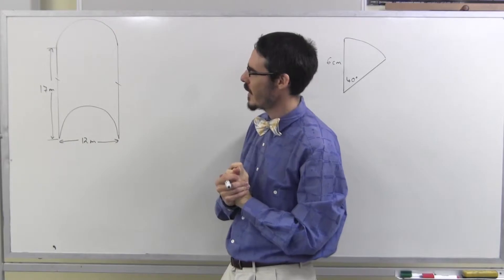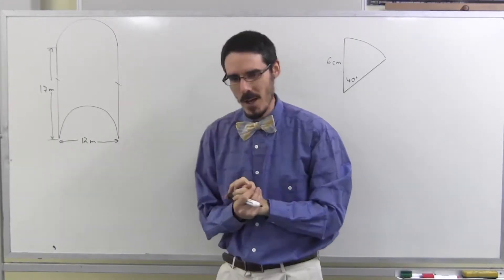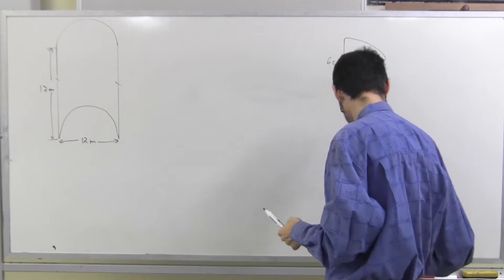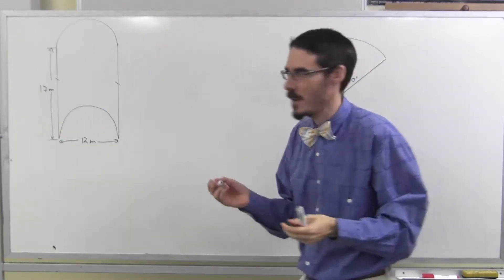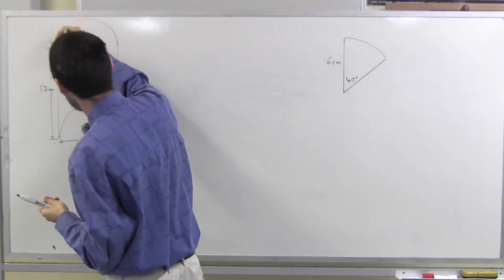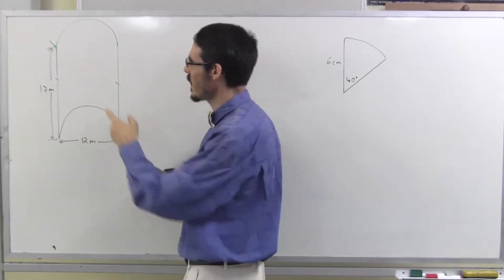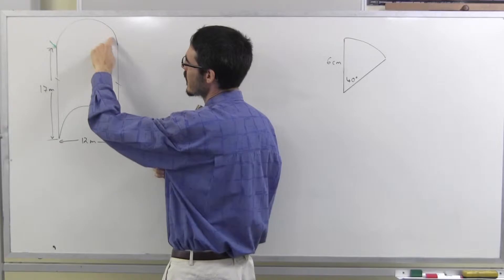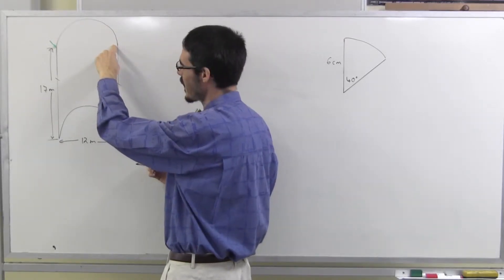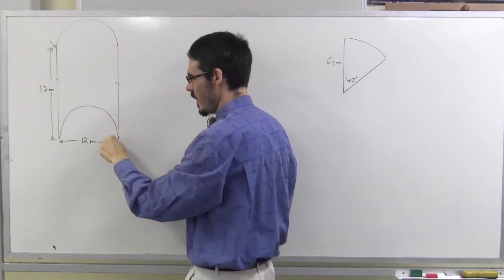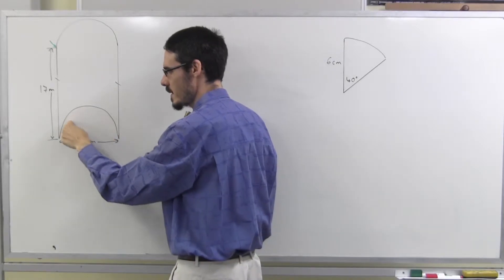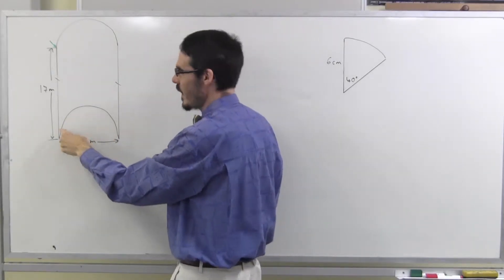Okay, so if I was an ant walking around this shape, again let's pick somewhere to start. How far am I going to walk? Well I've got half a circle here, I'll come back to that in a moment, I've got 17, I've got another half a circle, and then another 17.